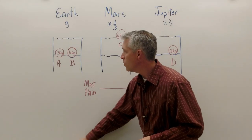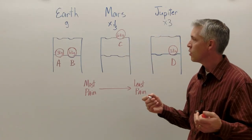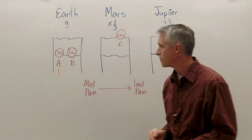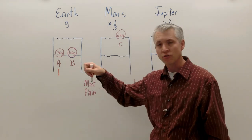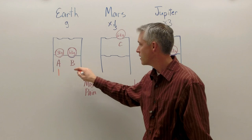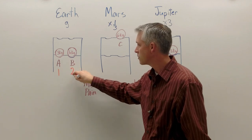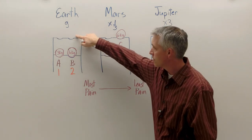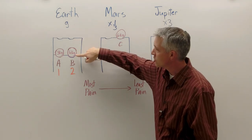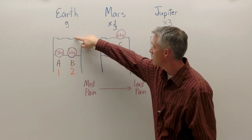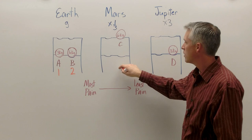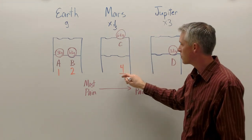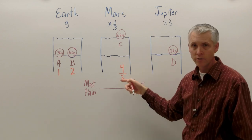So the one that would cause maybe a regular amount of pain, or I'll call this level pain one, is A. And because B has twice the mass, it would cause twice the pain, so let's call that pain level two. We come over here to Mars. Mars is twice the height of Earth, or of this shelf here on Earth, so that would be twice the pain. So that would be a pain level four, but then it only has one third the gravity, so I'd have to divide that number by three, so that I'd get one and a third there.